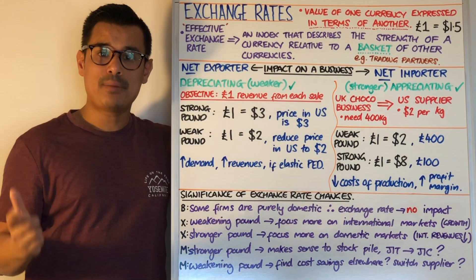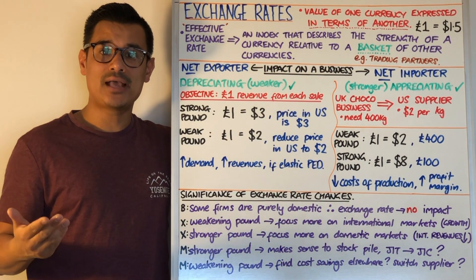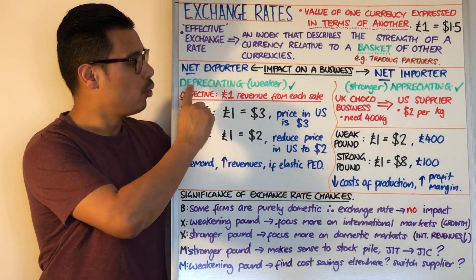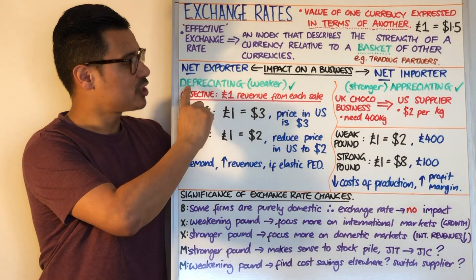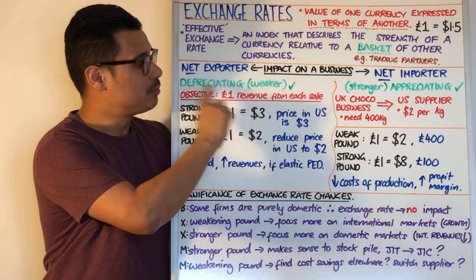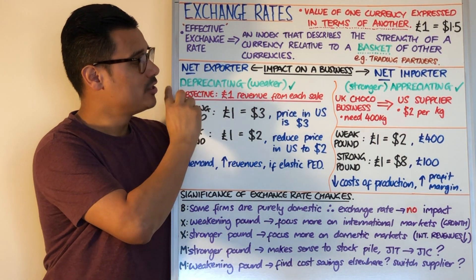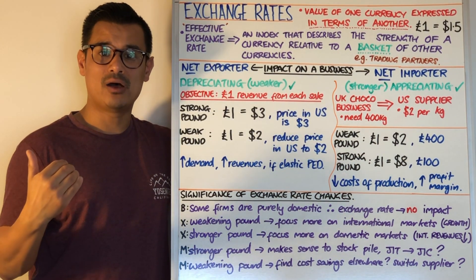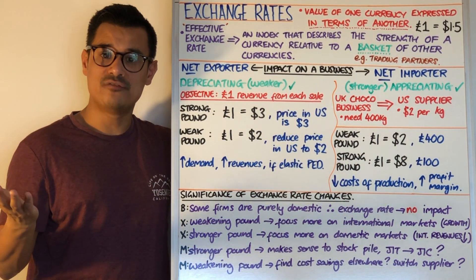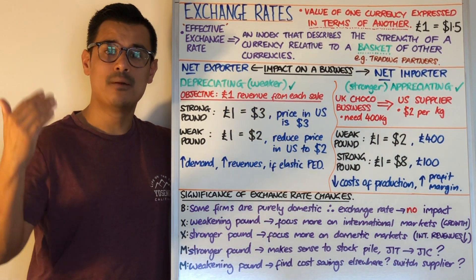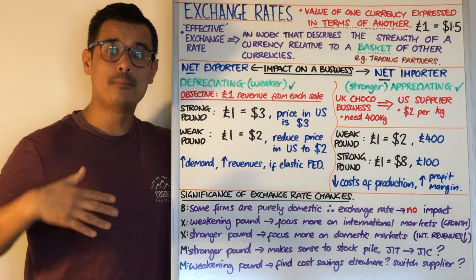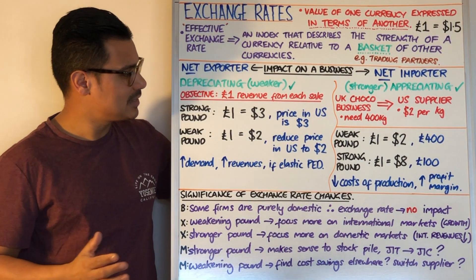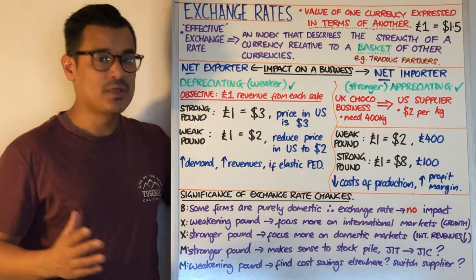If they export more than they import, they are clearly a net exporter. A net exporter is going to want the exchange rate to depreciate — depreciate means weaker. A weaker pound, for example if it's a UK business, might sound bad, but it's not the case if you are a net exporter.